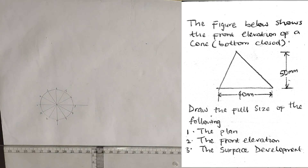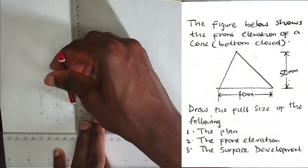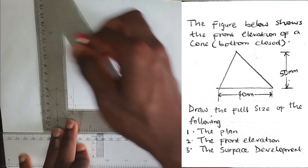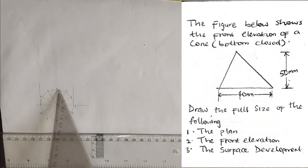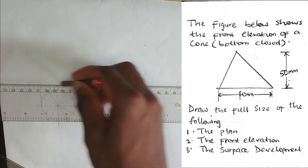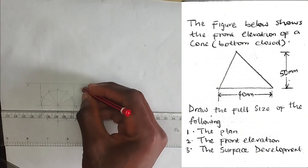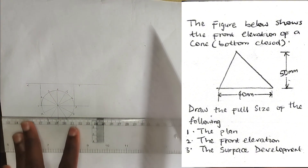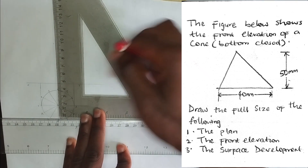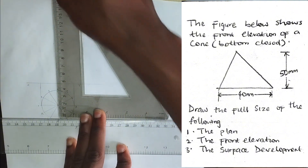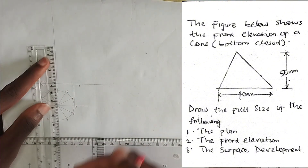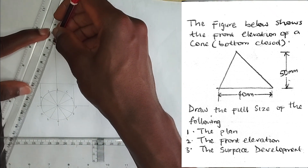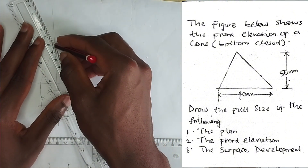The next thing is to draw a line straight upward from the plan, and at this point also draw a line upward. From a convenient distance from the plan, we draw our line XY. According to the question, the height of the front elevation is 50 millimeters, so from the center line I project it upward and mark 50 millimeters.